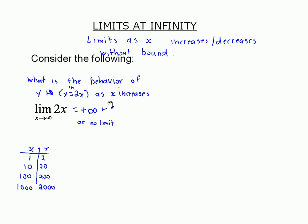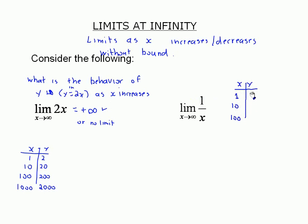Pay attention to that first example because we see variations throughout. The limit of 1 over x as x increases without bound — set up a table of values. x is 1, 10, 100, and y is just the reciprocal: 1, 1/10, 1/100. The y value is getting smaller and smaller but not negative, so it's approaching 0.